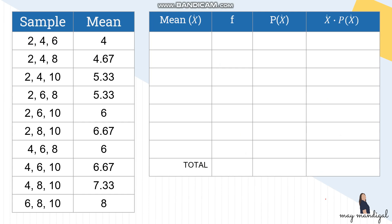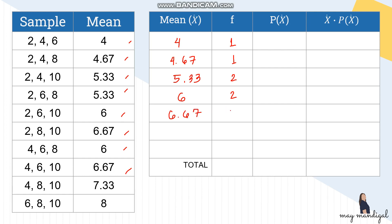Now we create the sampling distribution table with columns: x-bar, frequency, probability, and x-bar × P(x-bar). The unique means and their frequencies are: 4 (freq 1), 4.67 (freq 1), 5.33 (freq 2), 6 (freq 2), 6.67 (freq 2), 7.33 (freq 1), 8 (freq 1).